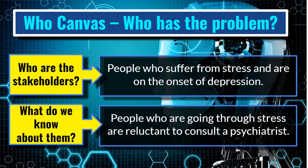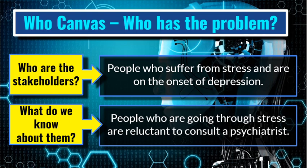In the four W's, the first W is 'Who'. For the Who canvas we need to answer: who has the problem? Who are the stakeholders and what do we know about them? The stakeholders are people who suffer from stress and are on the onset of depression. What do we know about them? We know that people who are going through stress are reluctant to consult a psychiatrist.